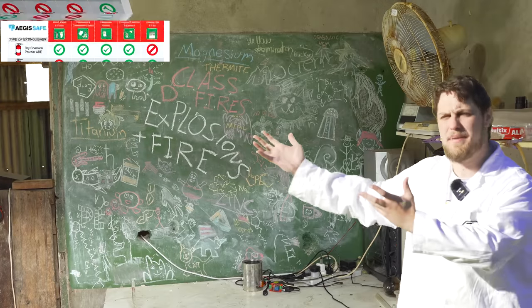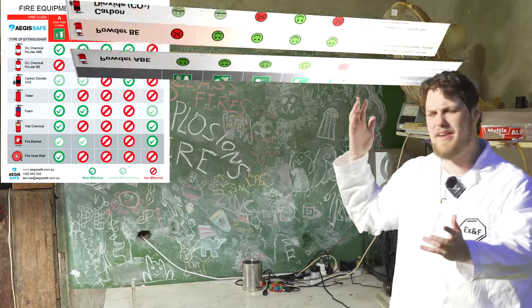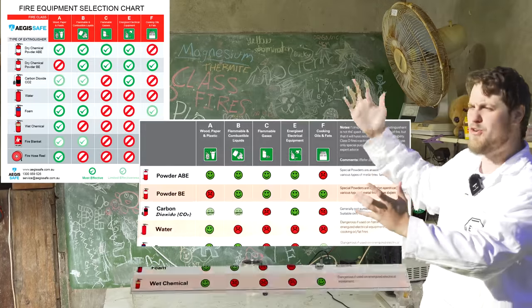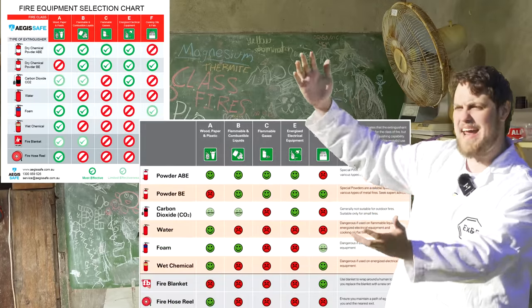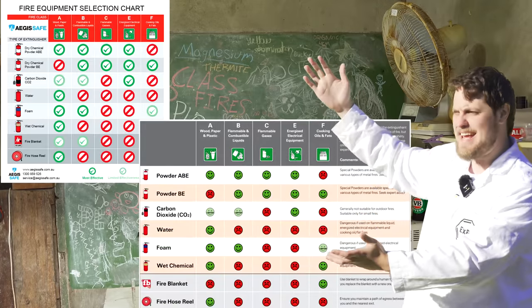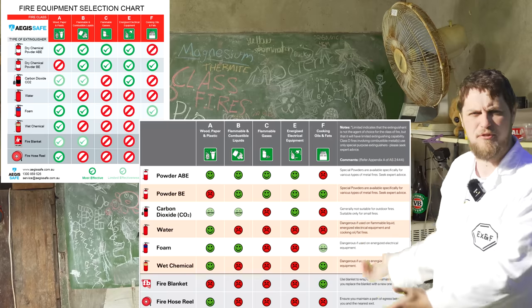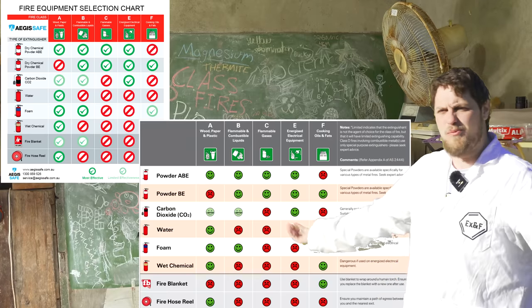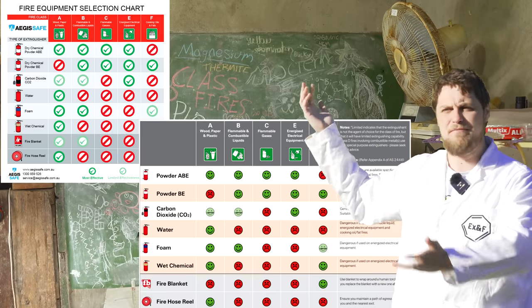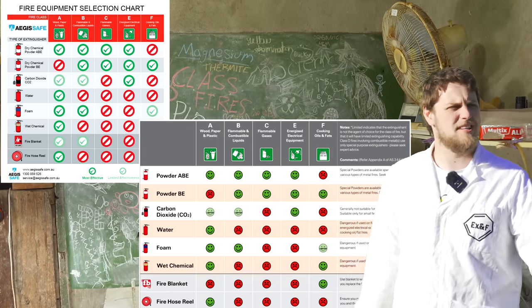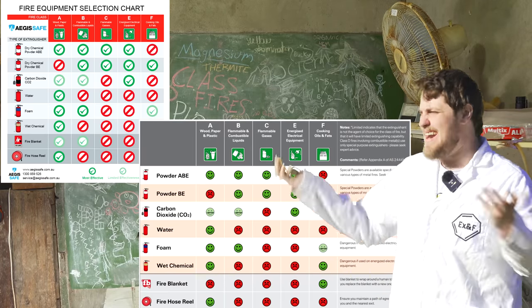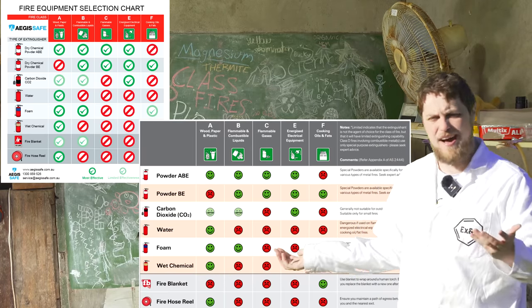If you look up fire extinguisher compatibility charts online, they'll often only talk about class A, B, C, E and F fires. So what is a class D fire, how do we start one, and how do we put it out?